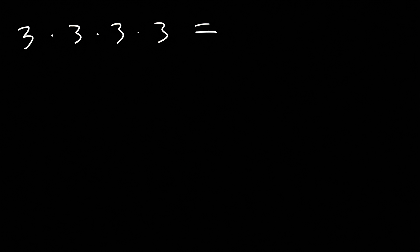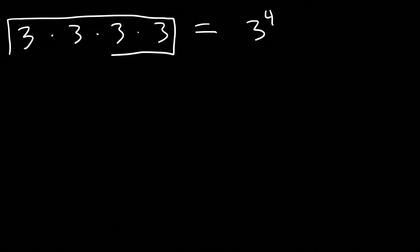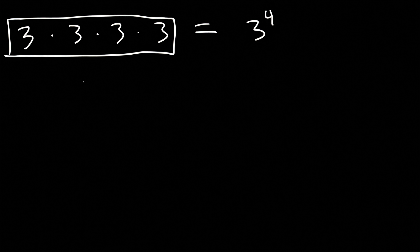Consider this expression: 3 times 3 times 3 times 3, four times. Is there another way of writing this? It turns out there is. Instead of writing 3 four times, you can say this is 3 to the 4th power. This is the use of exponents — a nice way of writing a repetitive expression. Any time you have repeated multiplication, you can use exponents to simplify the expression.